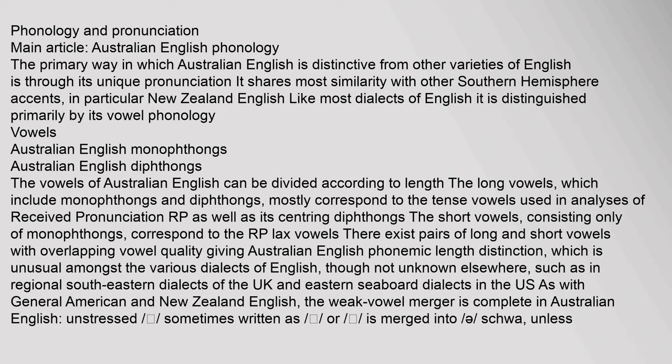The vowels of Australian English can be divided according to length. The long vowels, which include monophthongs and diphthongs, mostly correspond to the tense vowels used in analyses of Received Pronunciation (RP), as well as its centring diphthongs. The short vowels, consisting only of monophthongs, correspond to the RP lax vowels. There exist pairs of long and short vowels with overlapping vowel quality, giving Australian English a phonemic length distinction, which is unusual amongst the various dialects of English, though not unknown elsewhere. The weak vowel merger is complete in Australian English.